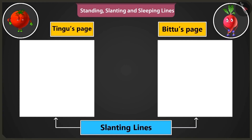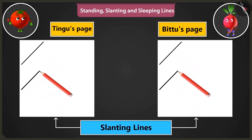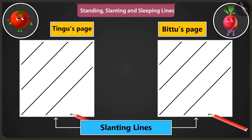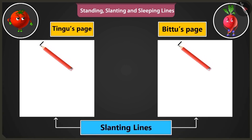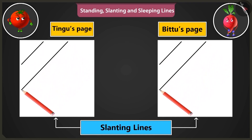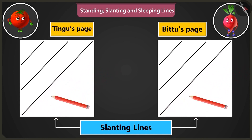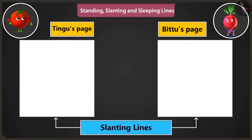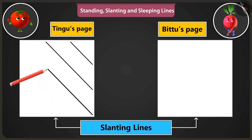Come on, now let's practice making slanting lines. We have to make lines from the bottom left part to the top right part like this, one by one. Wow, this is so much fun. Now slanting lines are to be drawn from the top right side of the page towards the bottom like this. Just see, now my lines are turning out perfectly fine. You are doing very well. Now the slanting lines have to start from the bottom right corner of the page. These lines are to be drawn from the right bottom to the top in this manner.